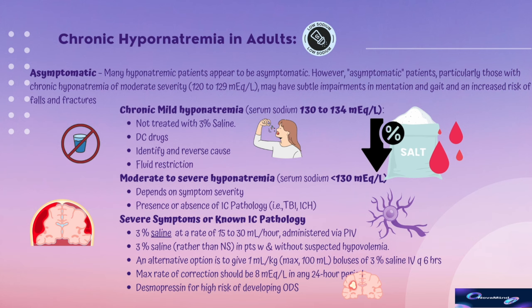The treatment of hyponatremia in hospitalized patients has four important goals: to prevent further declines in serum sodium concentration; to decrease intracranial pressure in patients at risk for brain herniation; to relieve symptoms of hyponatremia; and to avoid excessive correction in patients at risk for osmotic demyelination syndrome. Patients at high risk for ODS include those with serum sodium less than or equal to 105, and those with hypokalemia, alcohol use disorder, malnutrition, liver disease, and possibly hypophosphatemia.